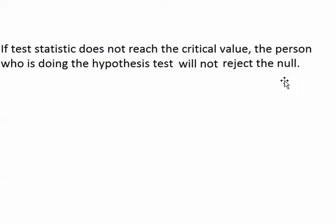If I only cough one or two times during the day, that is lower than my critical value, so I would just assume that it happened by chance and that nothing is going on. The decision in a hypothesis test really just depends on which side of the critical value the test statistic ends up on. If the test statistic comes out lower than the critical value, you fail to reject the null. If the test statistic comes out at the critical value or higher, you reject the null.